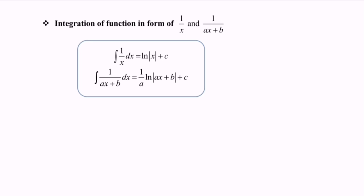Hello everyone. Here we have the situation for integration of a function in the form of a reciprocal function, where we have 1 over x and 1 over ax plus b to the power of 1. Referring to the box, we have: integrate 1 over x with respect to x, and we will obtain ln|x| plus c.